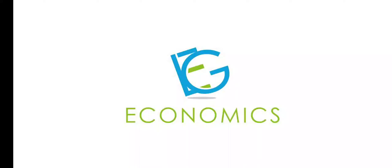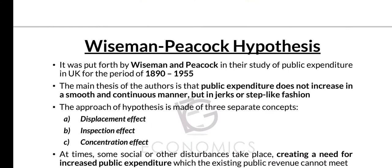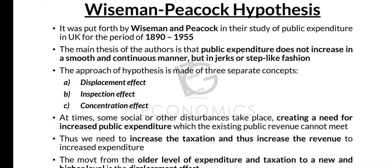Hi students, welcome to my channel Economic Lectures. In this video we'll be discussing the Wiseman and Peacock hypothesis. In the last video we discussed Wagner's hypothesis, and it was Wiseman and Peacock who criticized Wagner's hypothesis. By criticizing it, they put forward their own theory known as the Wiseman-Peacock hypothesis. They developed this in their study of public expenditure in the UK for the period 1890 to 1955.